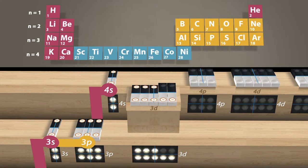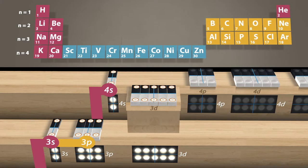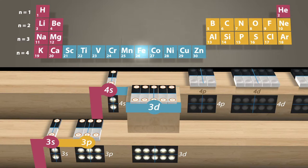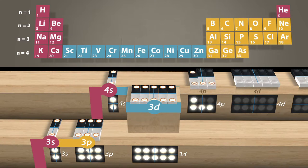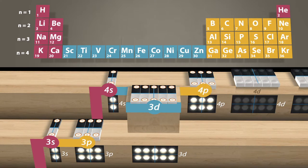The 3d orbital consists of 10 subgroup elements. All of them are transition metals, such as iron. Only then, the six 4p orbitals follow, up to krypton, which has a total of 36 electrons.